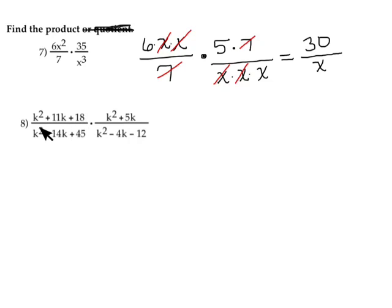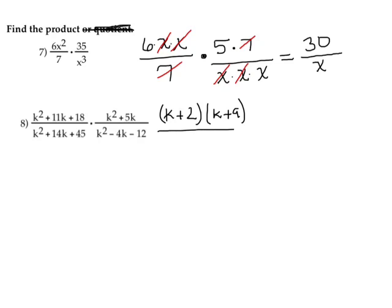The first piece is k squared plus 11k plus 18. I want factors of 18 that when added give me 11. I know that 2 times 9 is 18 and 2 plus 9 is 11, so those are my factors. I'll write that as k plus 2 times k plus 9.